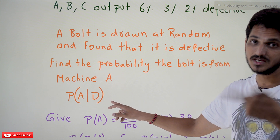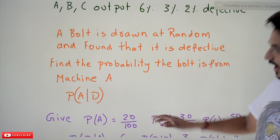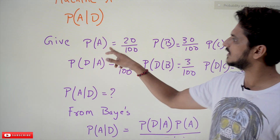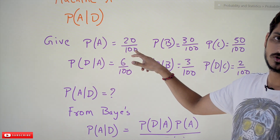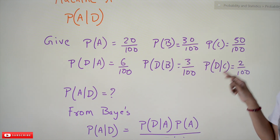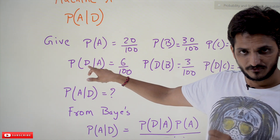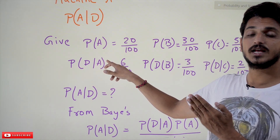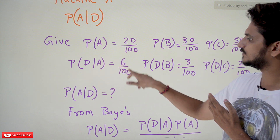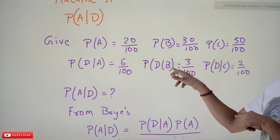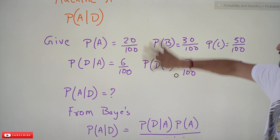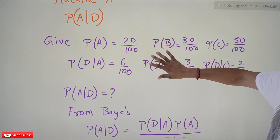Using Bayes theorem, let's assign the given values. Probability of A is 20/100, probability of B is 30/100, probability of C is 50/100. Probability of defective given it is from A is 6/100, probability of defective given it is from B is 3/100, and probability of defective given it is from C is 2/100. These values are already provided.